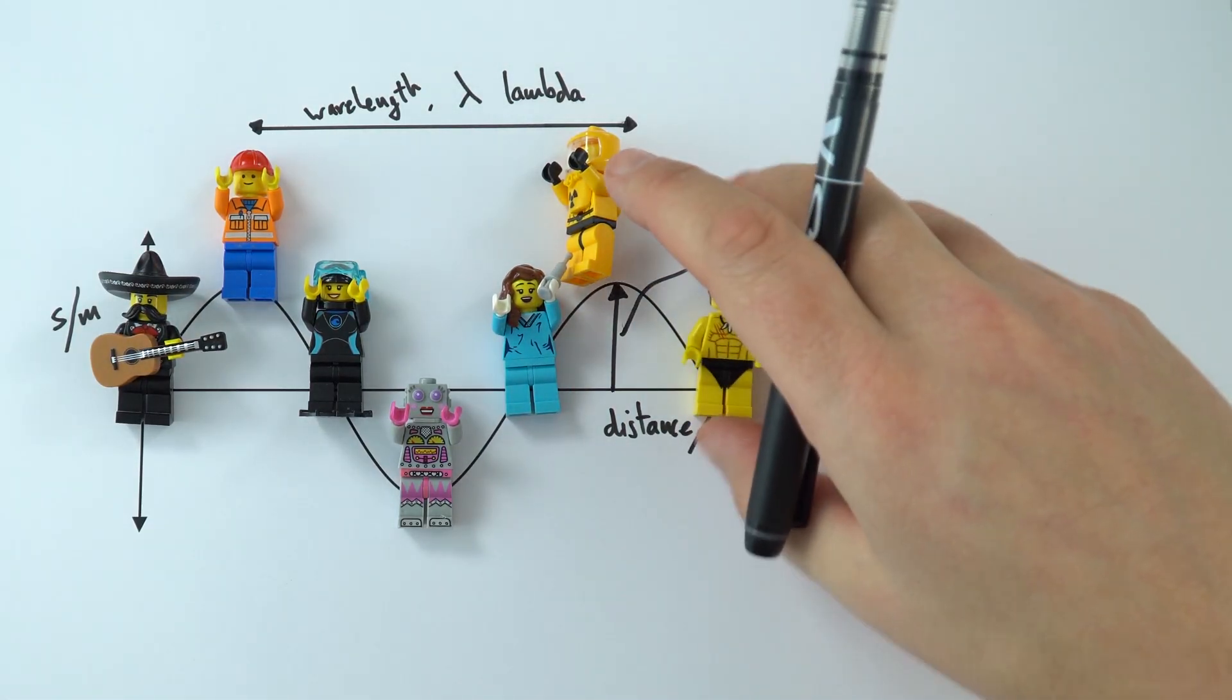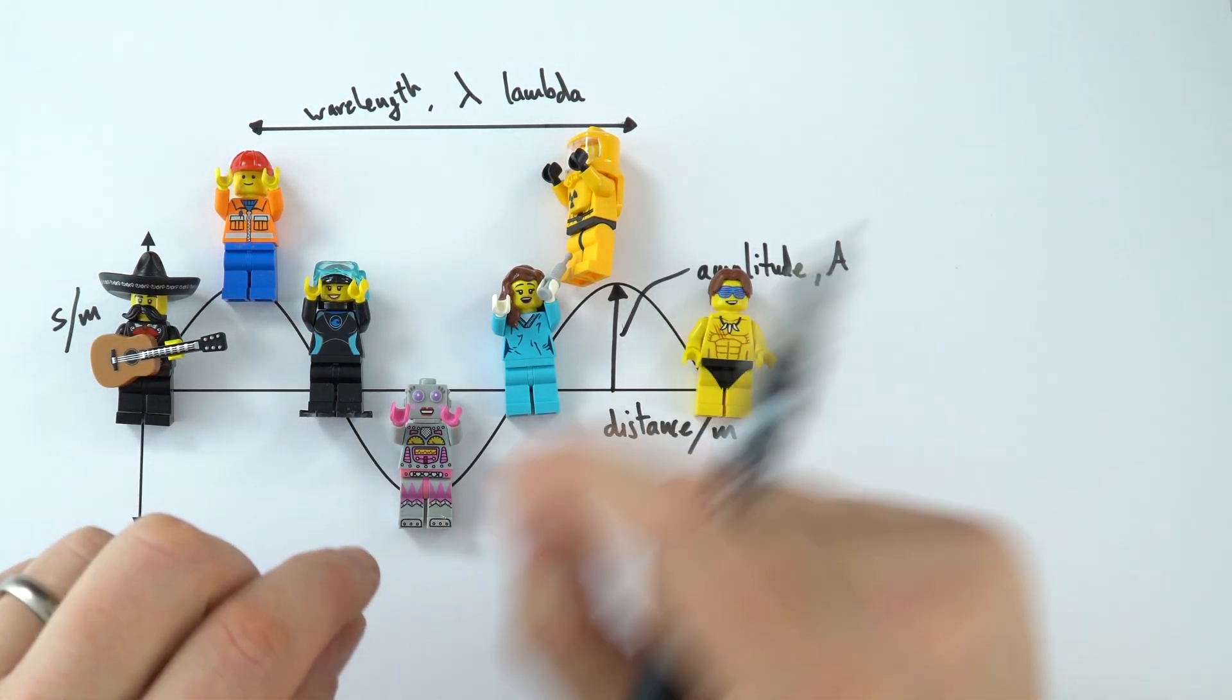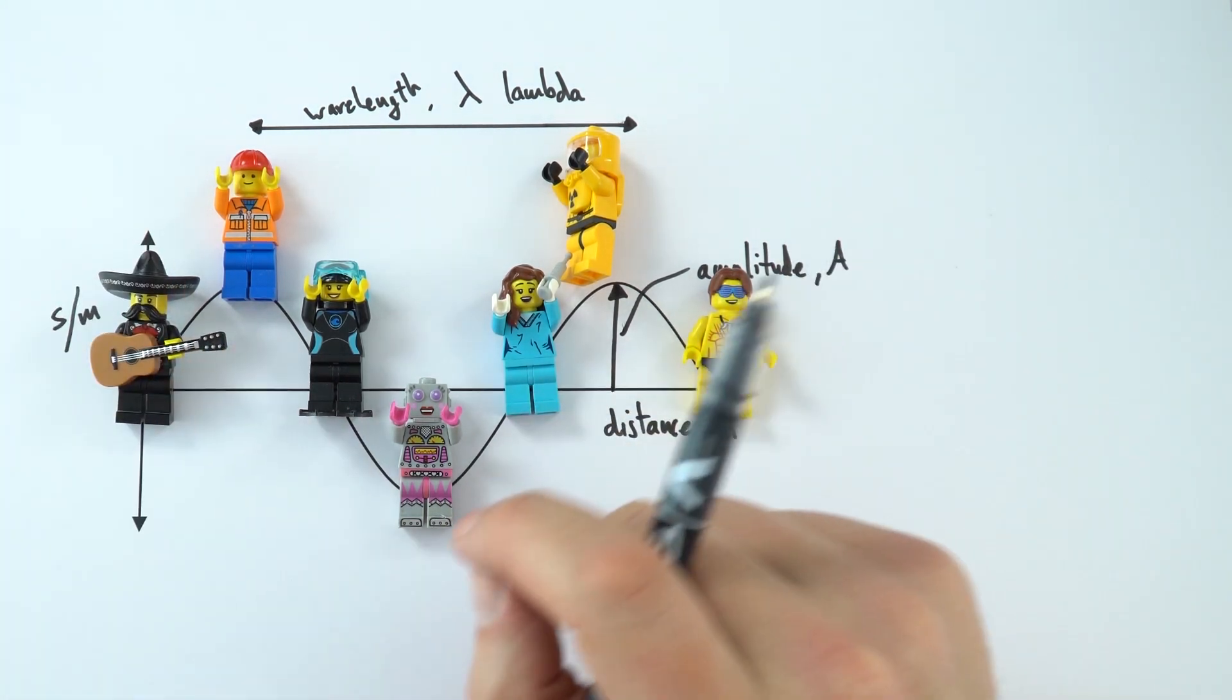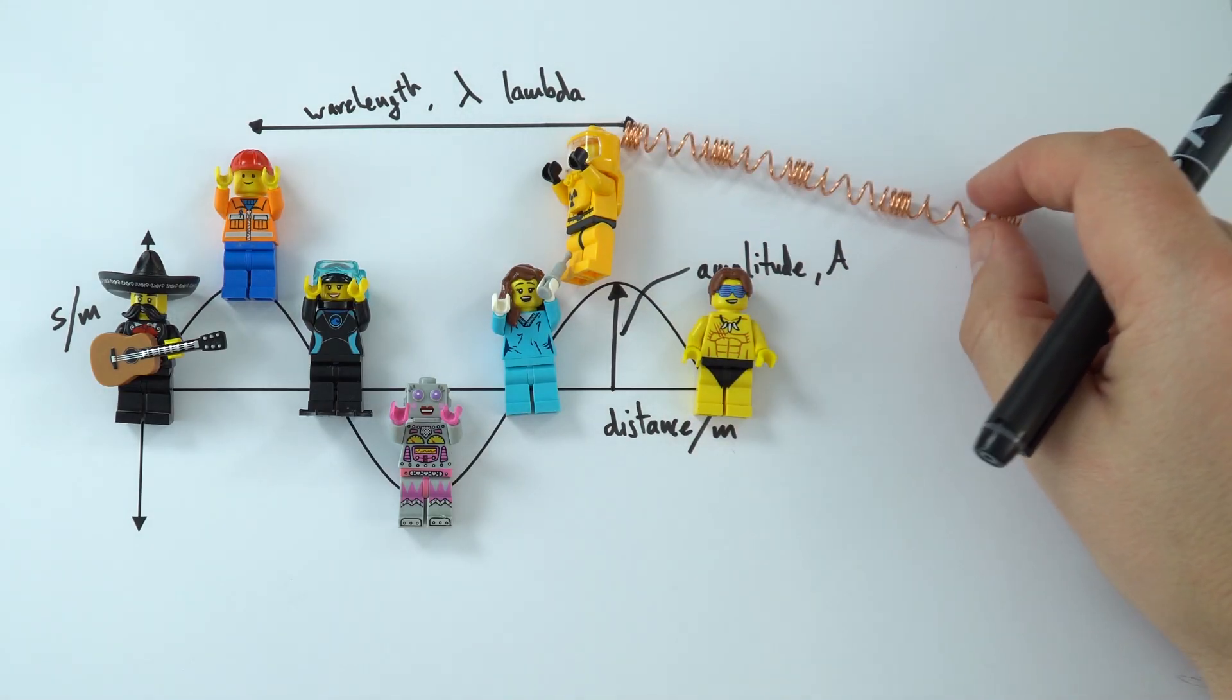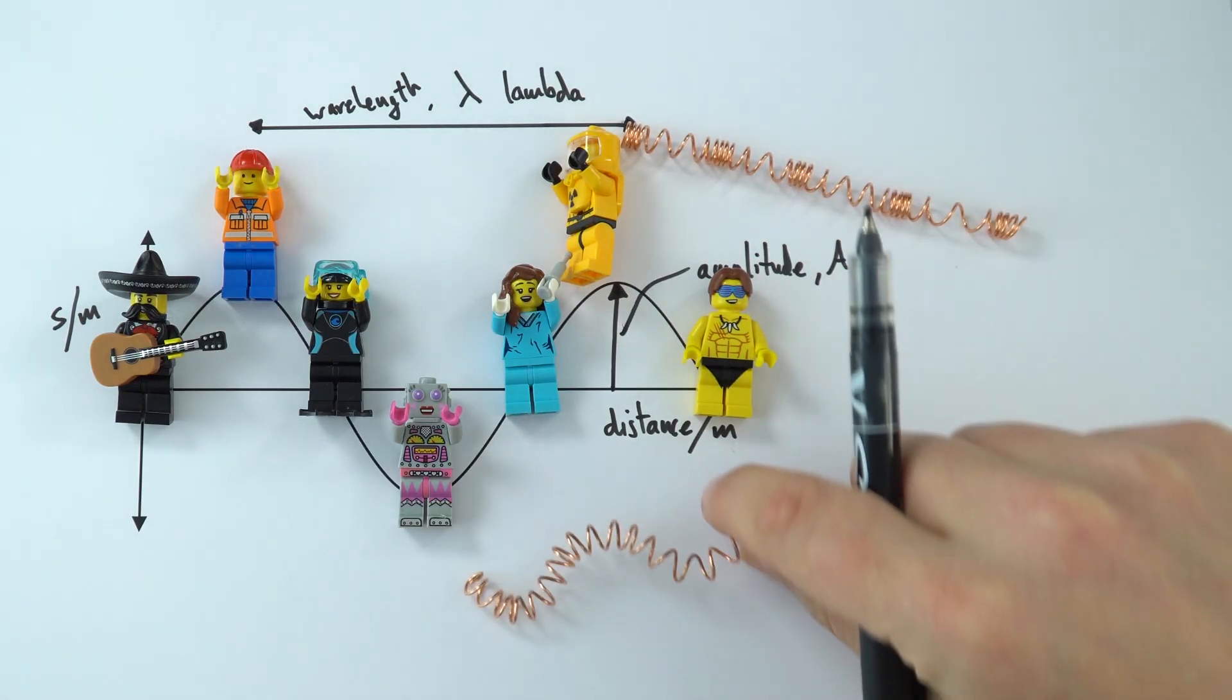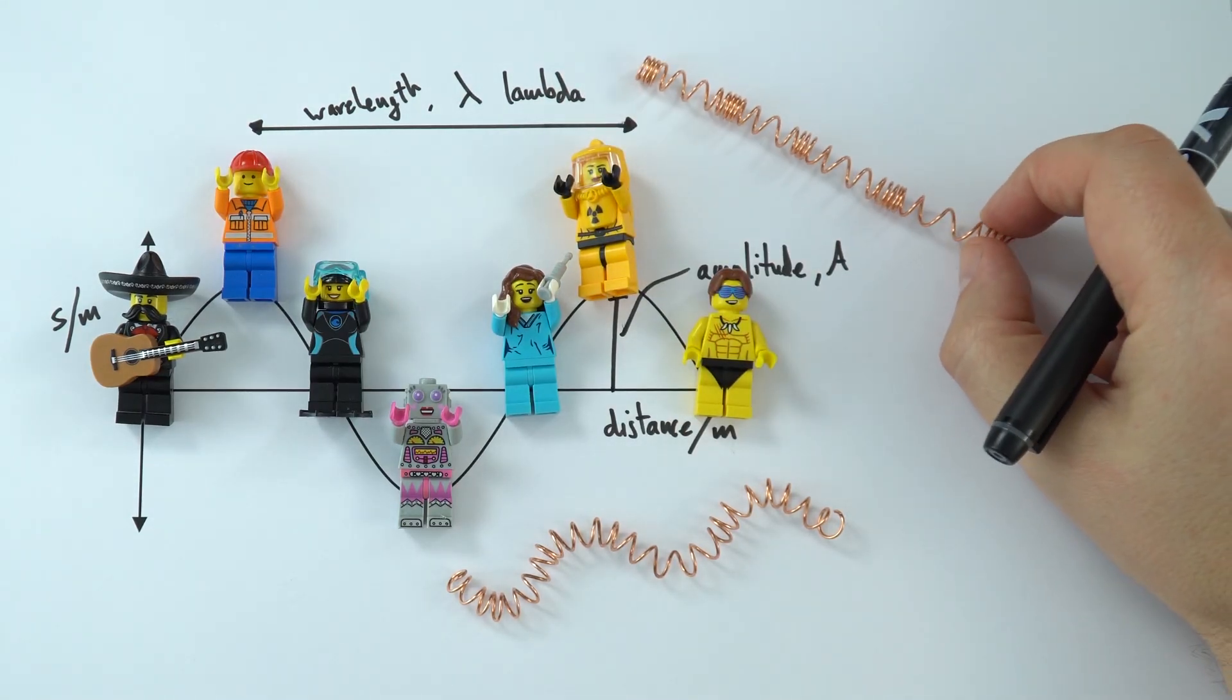And I suppose the other thing is that this graph here is just really a measure of the particles and how far they've moved from their rest position. And therefore, it can apply to both longitudinal waves and also transverse waves. So effectively, this is what you might observe with the slinky.